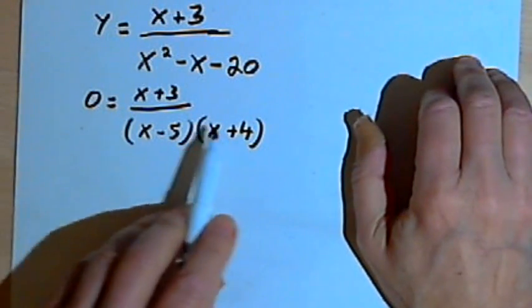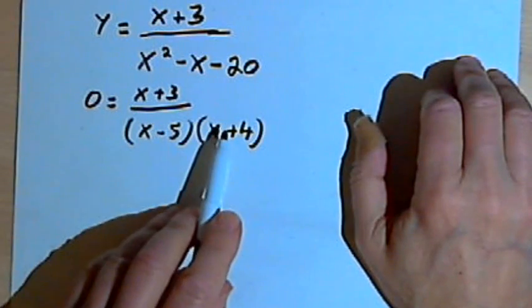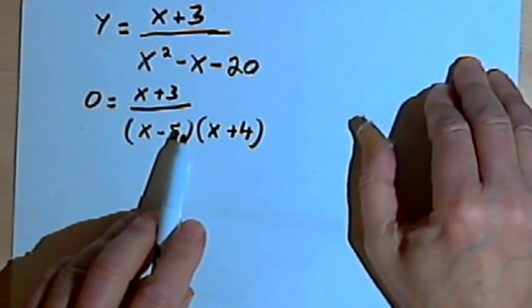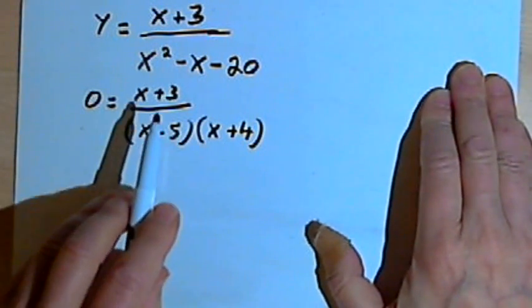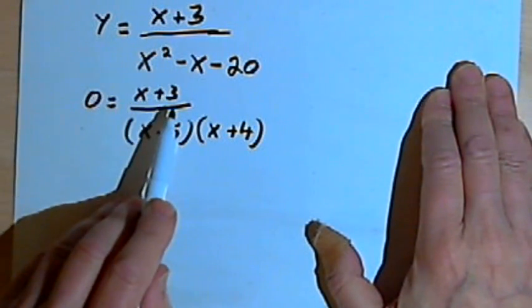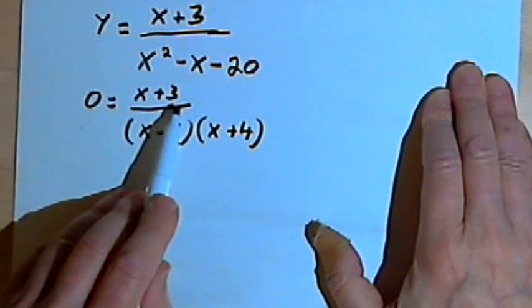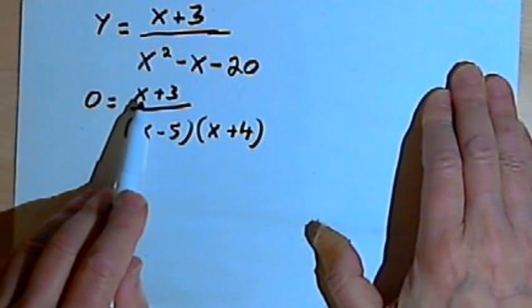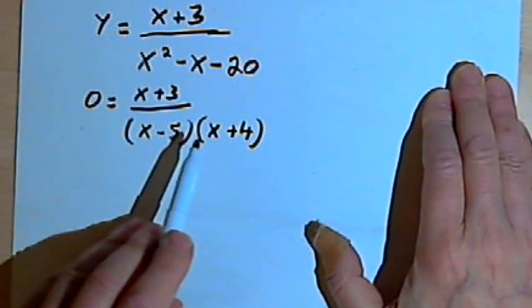For this rational expression, this equation on the right, to equal 0, all we have to do is make the numerator equal to 0. If I want to make the numerator equal to 0, I've got x plus 3. So that would mean x would be negative 3. That would turn the whole thing into a 0.